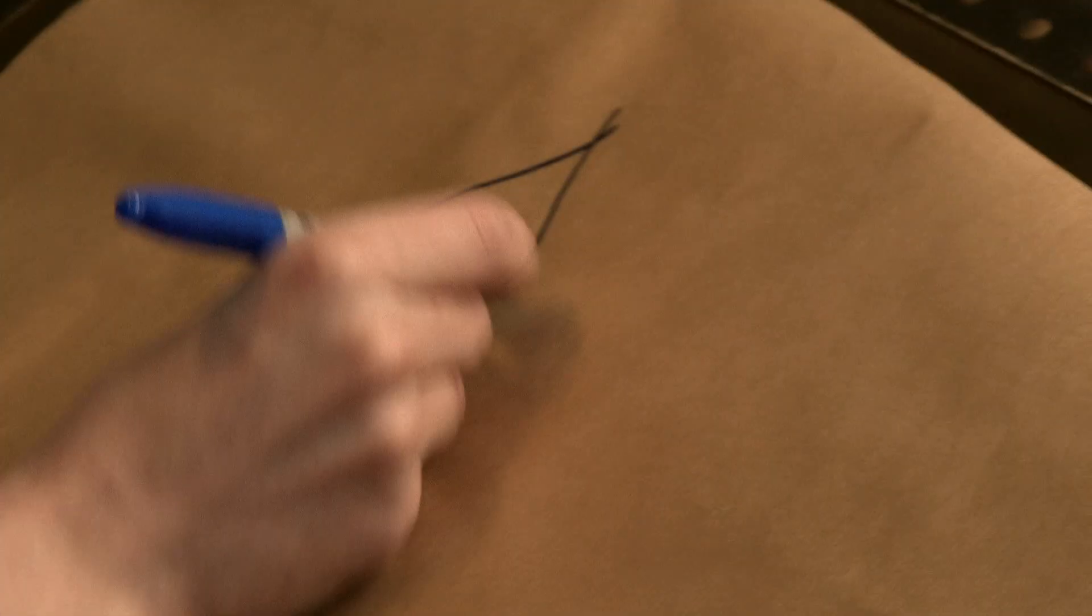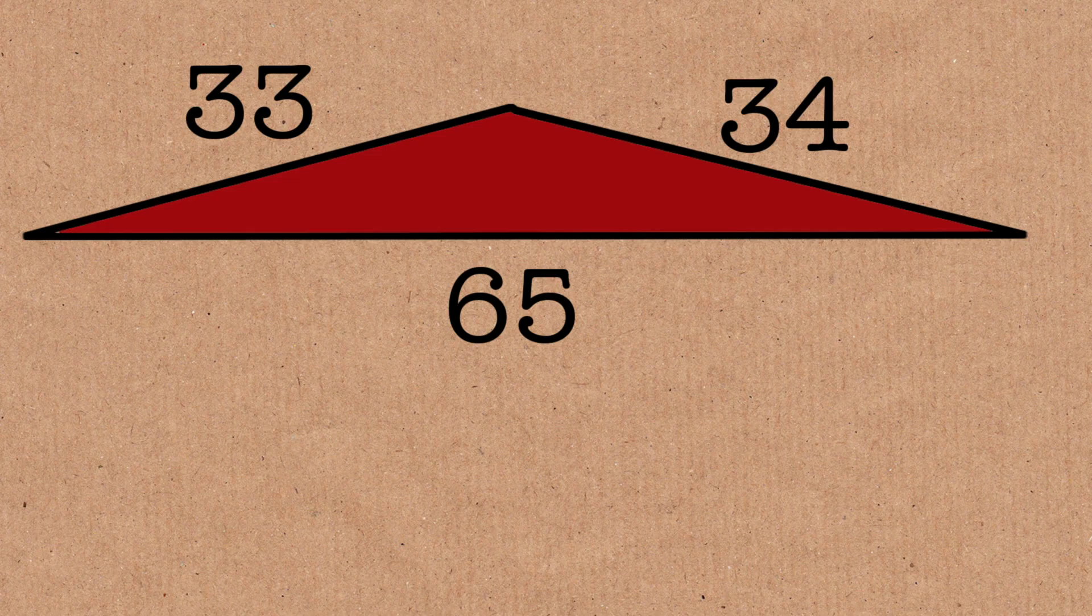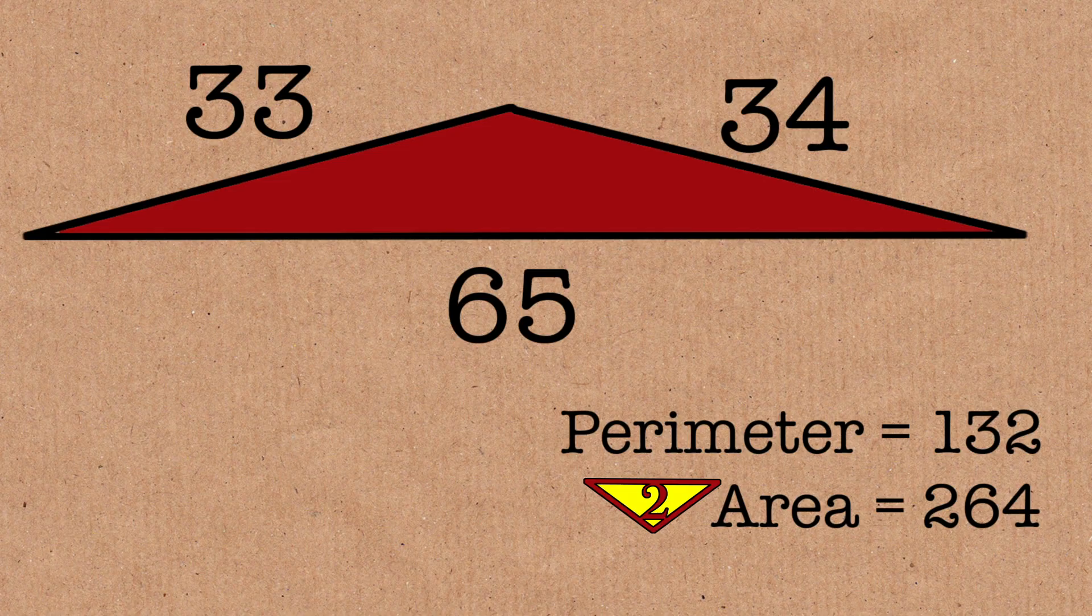Here's another triangle I wanted to show you. Let's draw it out. This has 33, 34, and 65. And for that, it's a perimeter of, if I'm all correct, 132. And an area, well we have a formula for that now, but I'll tell you the area, 264. So this is a triangle where the area is double the perimeter.